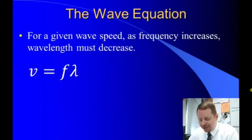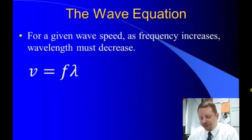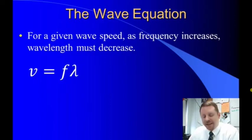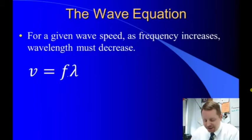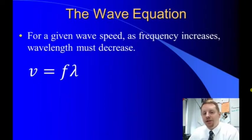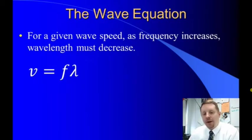The wave equation says that for a given wave speed or wave velocity, as frequency increases, wavelength must decrease. So the wave velocity is equal to frequency times wavelength. What's important to note here is that the wave velocity doesn't depend on frequency and wavelength — you can't increase the frequency of a wave and have it speed up. This is a relationship that shows you how frequency and wavelength are related.